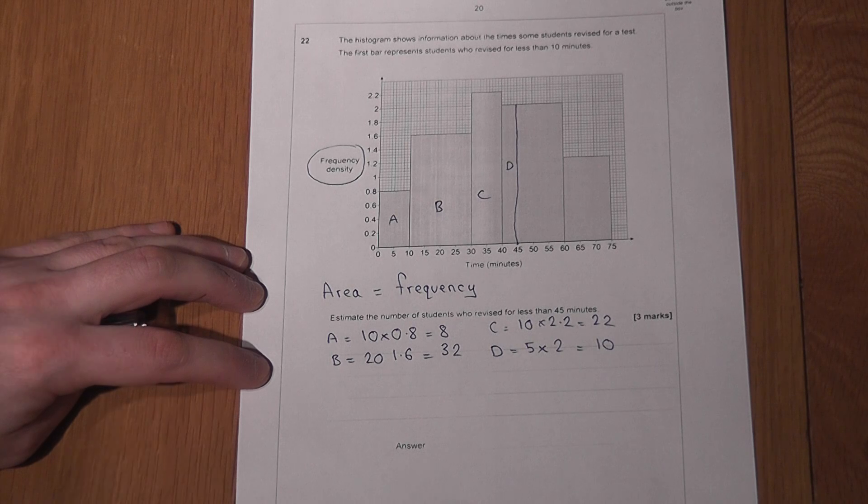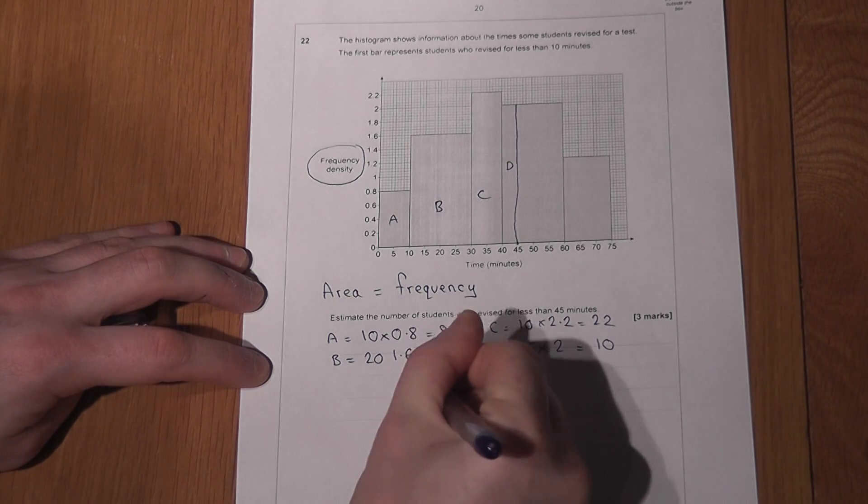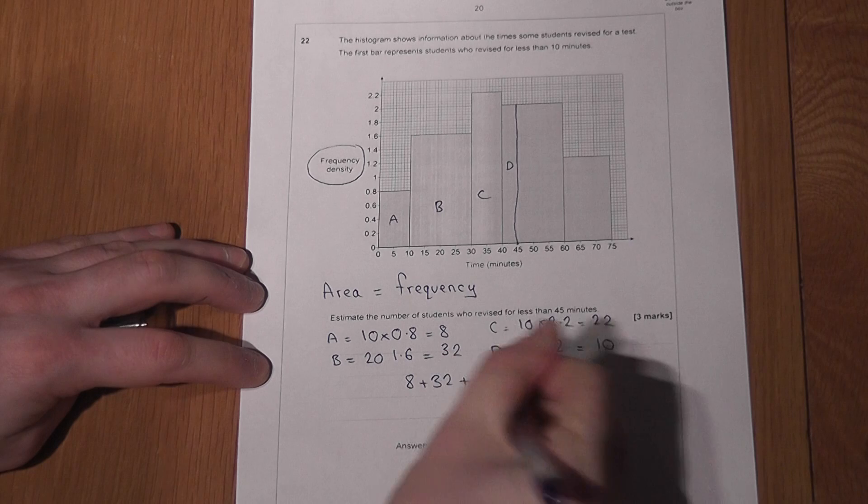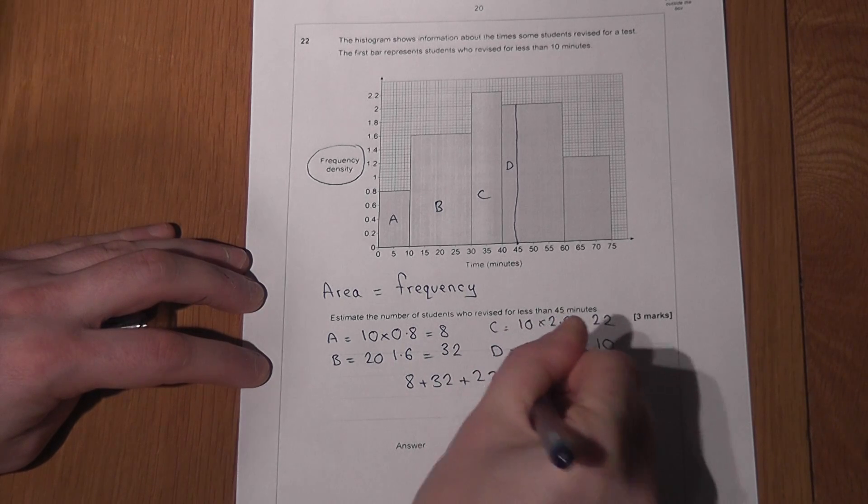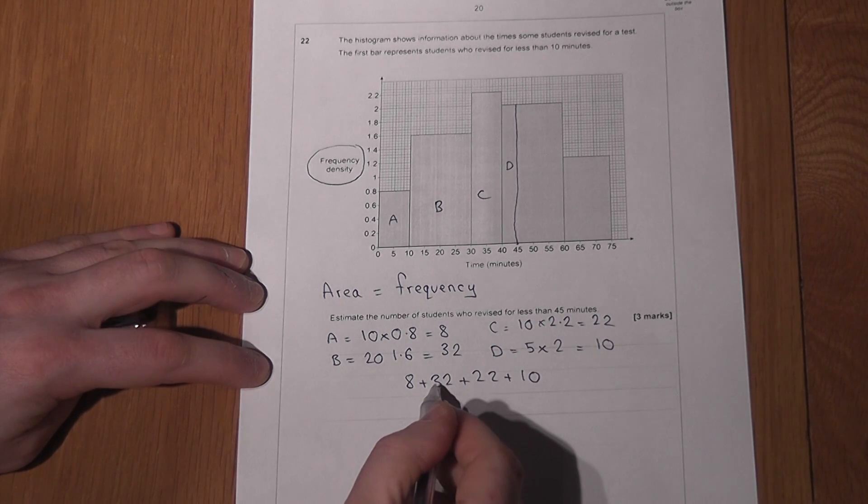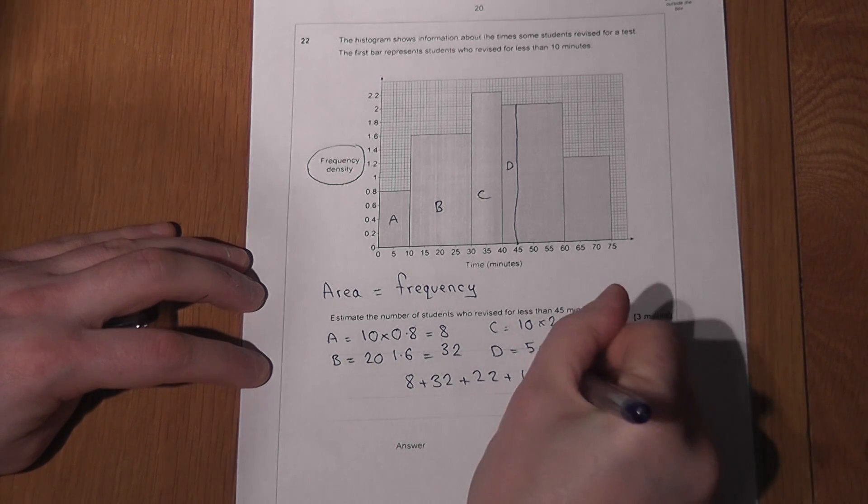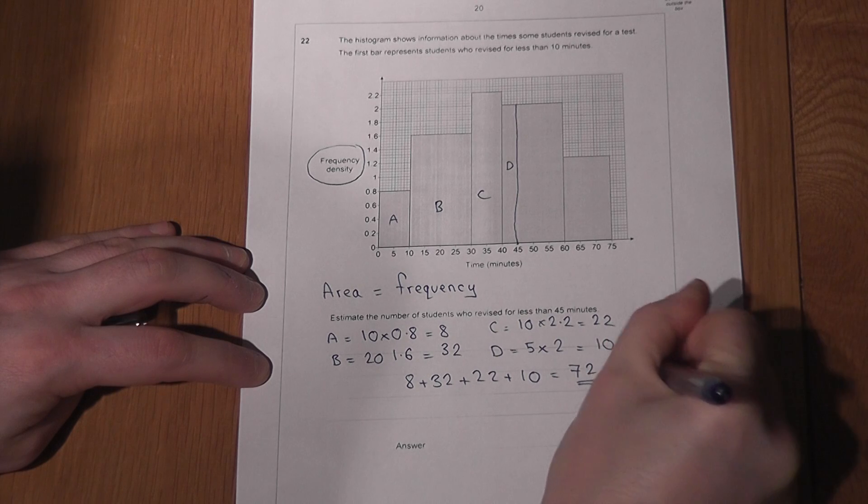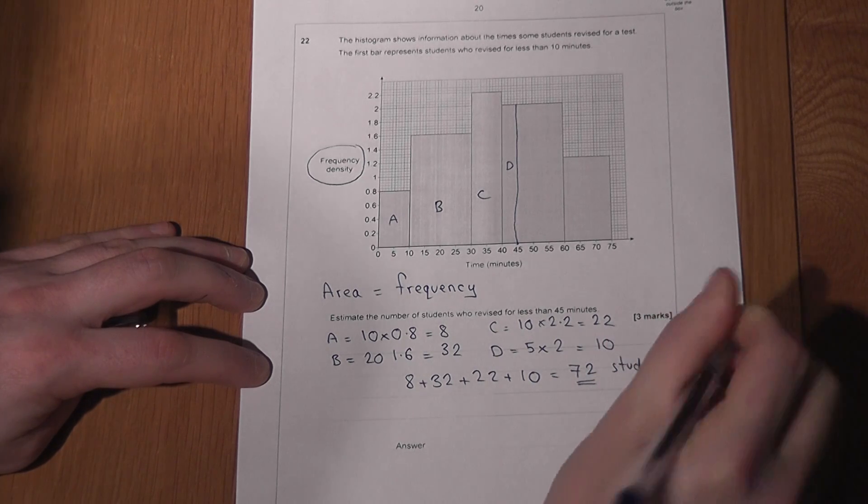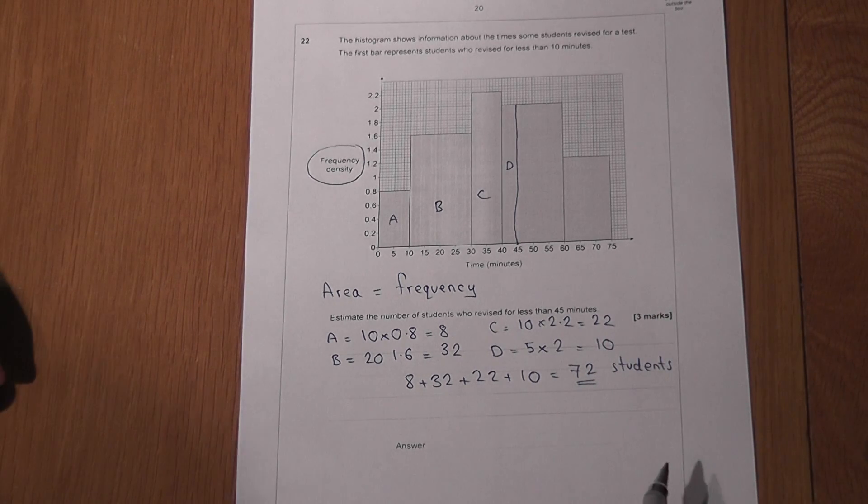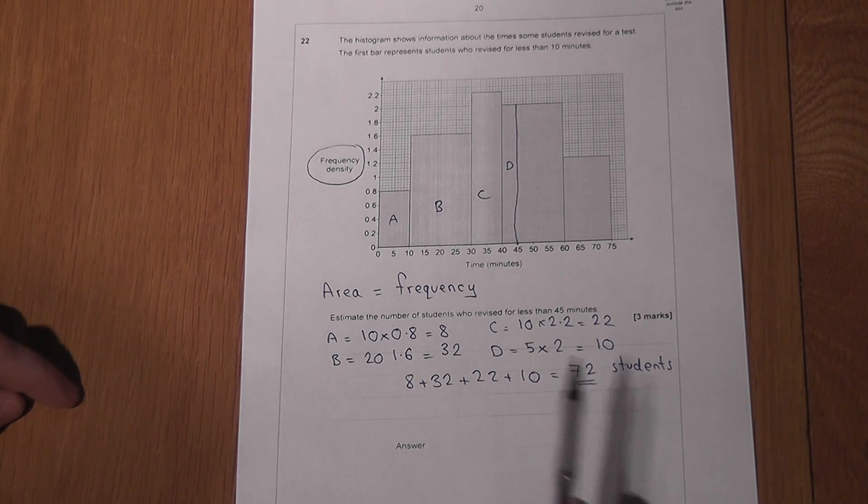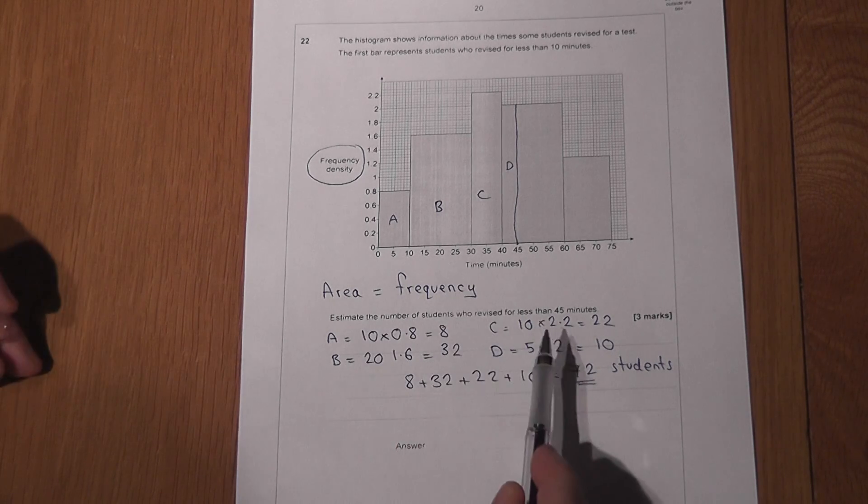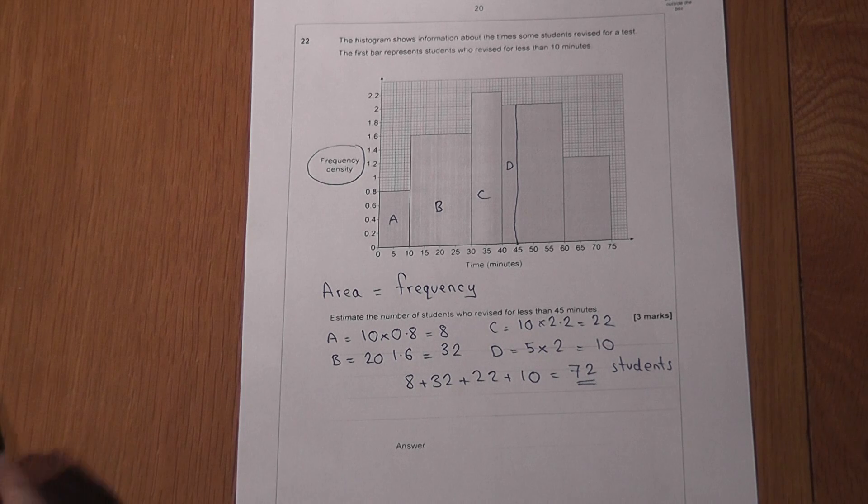...is just 8 people plus 32 plus 22 plus 10. 8 plus 32 is 40, 50, 60, 62. So I reckon there are around 72 students who revised for less than 45 minutes. And again, the key fact here is to find the frequency, we need to calculate the area.